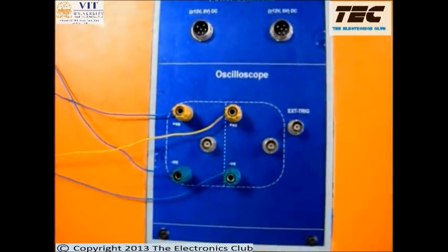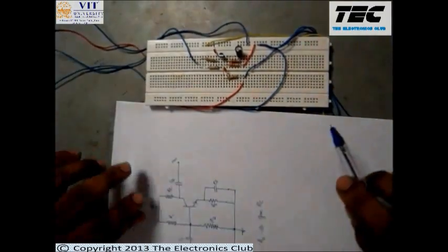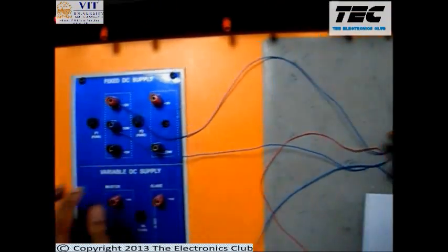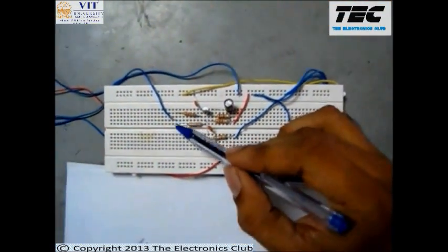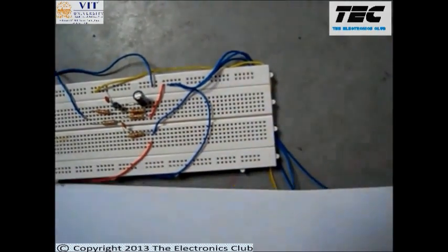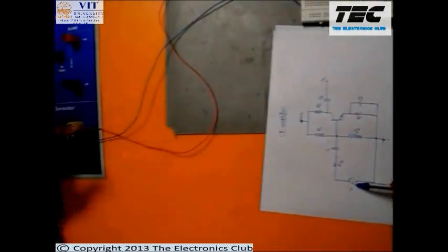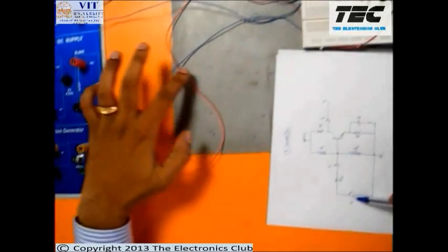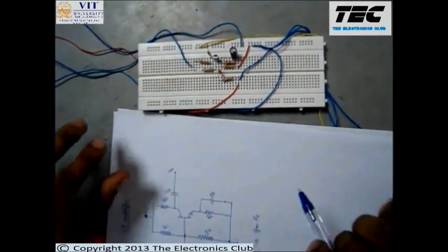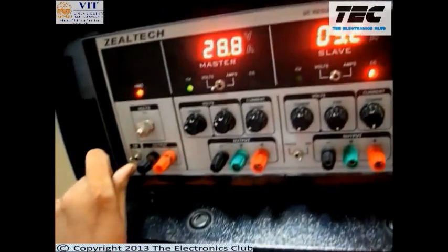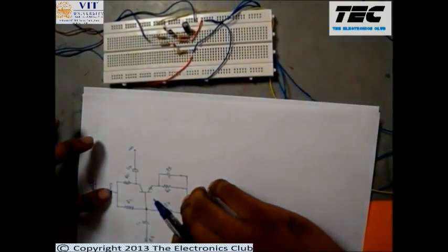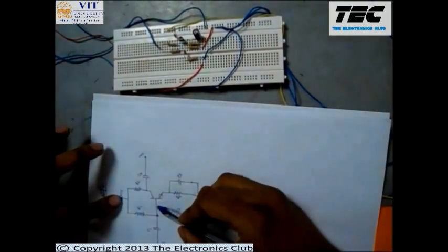The first channel of the oscilloscope has the input connected because we want to compare the input and output. First we will give the DC supply — this is the 12 volts and this is ground. The 12 volts is connected to the point where the two resistances RC and R1 are connected, and ground is connected here. Now I have given the DC supply, meaning my amplifier is biased — my transistor BJT is biased at a particular Q point.